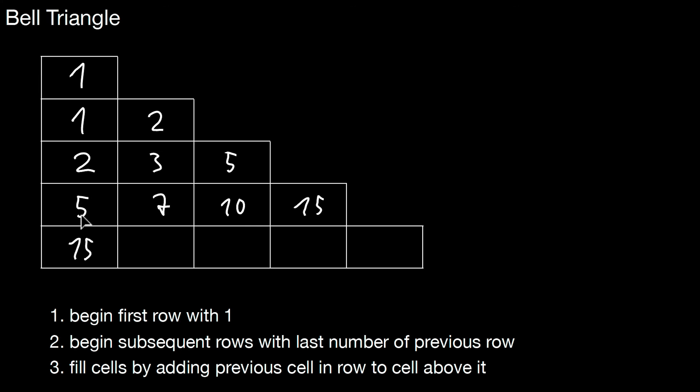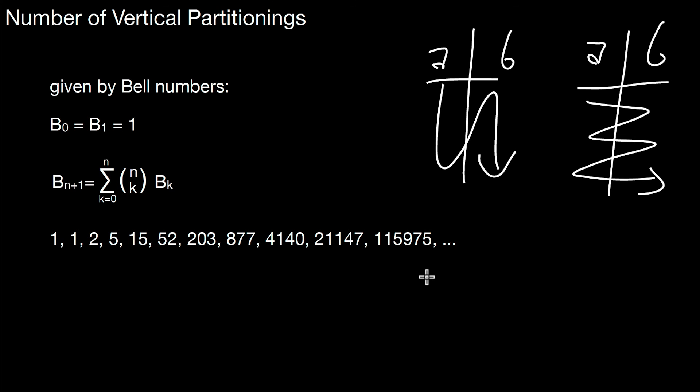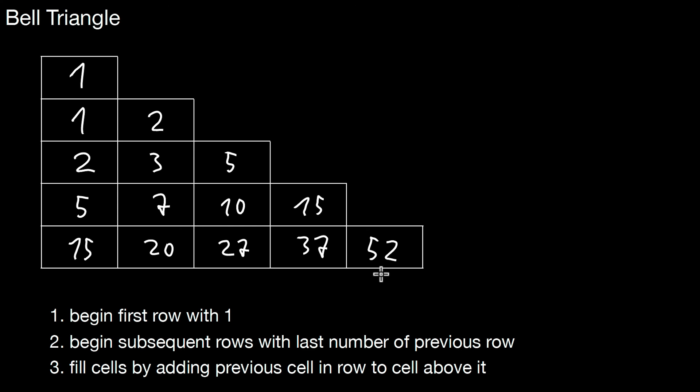This value is 15 plus 5 is 20. This value is 27. This value is 37. And that value is 52. That is a sequence. If you have 5 attributes, you already have 52 different partitionings. So that's a value we just computed.